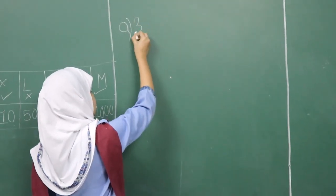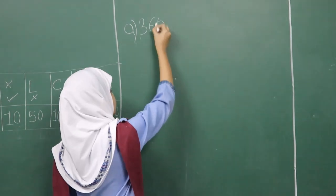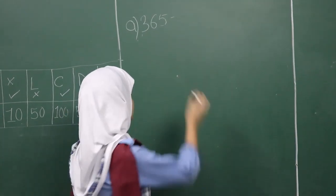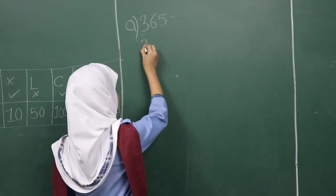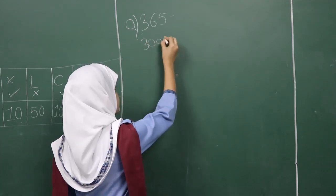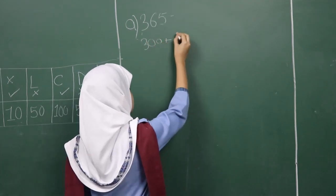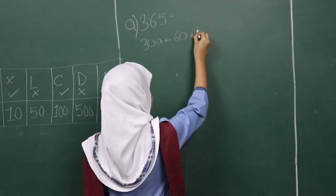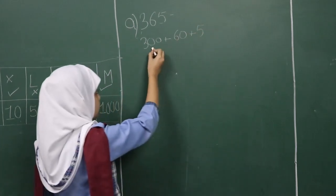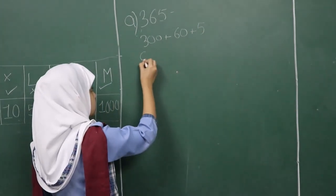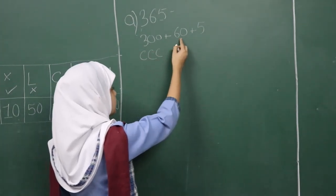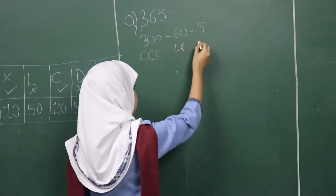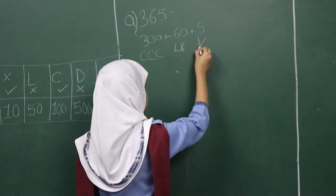Let's take the number 365. First, we will expand it: three hundred plus sixty plus five. Three hundred is CCC. Sixty is LX. And five is V. So we will write CCCLXV.